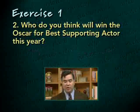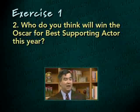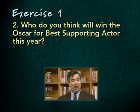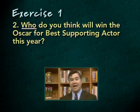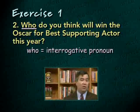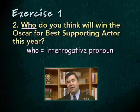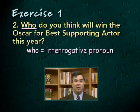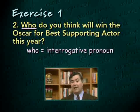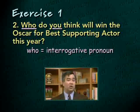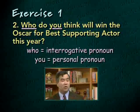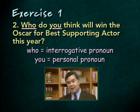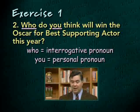Next sentence: 'Who do you think will win the Oscar for Best Supporting Actor this year?' This is an interrogative sentence. The very first word, who, is an interrogative pronoun — it introduces a direct question. There's also another pronoun: you, which is a personal pronoun referring to the person being spoken to. So this sentence contains two pronouns: who is an interrogative pronoun and you is a personal pronoun.